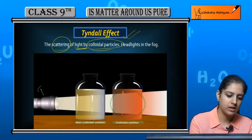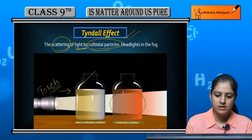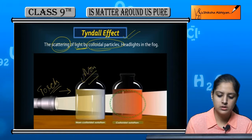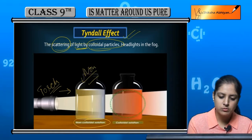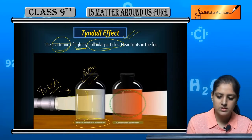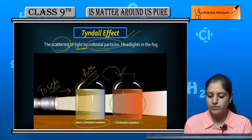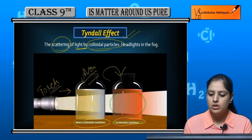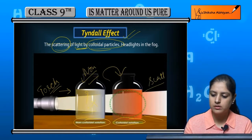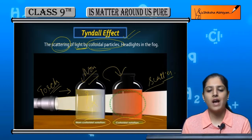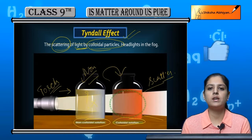As you can see in this demonstration, we have a torch with light passing through a non-colloidal solution — the beam of light is not scattered. When we move to the second solution, which is a colloidal solution, the light scatters. This scattering of light is known as the Tyndall effect, which is only possible in colloidal particles.